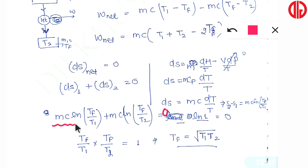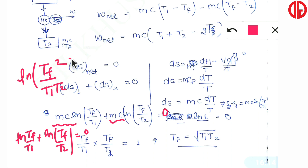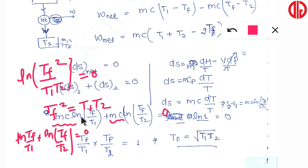Writing the entropy change of the first body: MC·ln(Tf/T1), and for the second body: MC·ln(Tf/T2). Setting their sum to zero: MC·[ln(Tf/T1) + ln(Tf/T2)] = 0. This gives ln(Tf²/(T1·T2)) = 0. Therefore Tf² = T1·T2, so Tf = √(T1·T2).